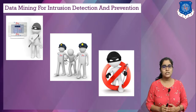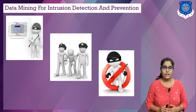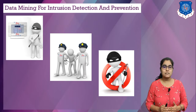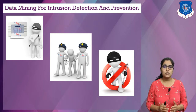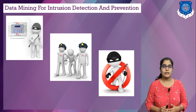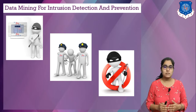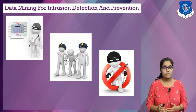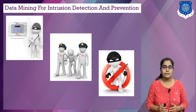Intrusion detection systems and intrusion prevention systems both monitor network traffic and system executions for malicious activities. However, the intrusion detection system produces reports, whereas the intrusion prevention system is placed inline and is able to actively prevent or block intrusions that are detected.